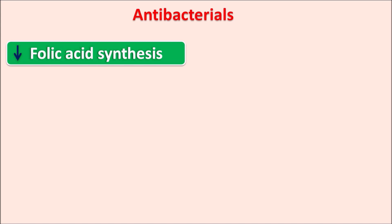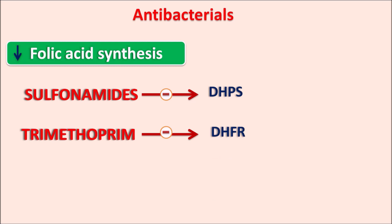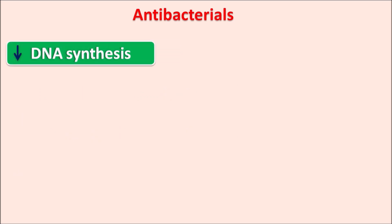The third category inhibits folic acid synthesis and utilization. We have two types: sulfonamides and trimethoprim. Sulfonamides inhibit folic acid synthesis by inhibiting the dihydropteroate synthetase enzyme, which converts PABA into folic acid. Trimethoprim inhibits the dihydrofolate reductase enzyme, responsible for reduction of folic acid into tetrahydrofolate. These drugs are particularly used to treat urinary tract infections.